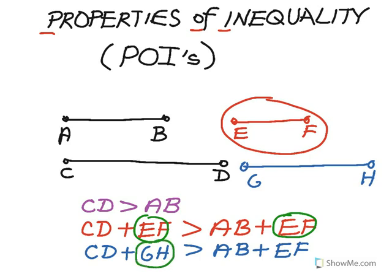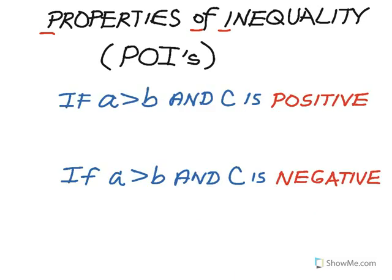The last properties come straight from algebra and are about multiplying and dividing two values by the same thing. If A is greater than B and C is a positive number, then if I multiply A by C and multiply B by C, the left side A times C will still be larger. The same goes with division: A over C will still be greater than B over C. In other words, if I multiply or divide both terms of an inequality by a positive number, the inequality remains true.